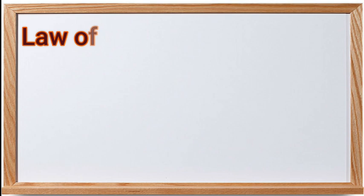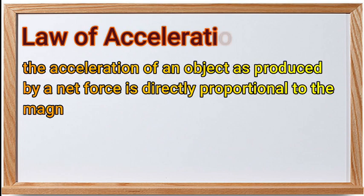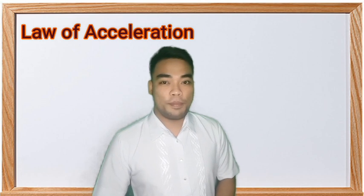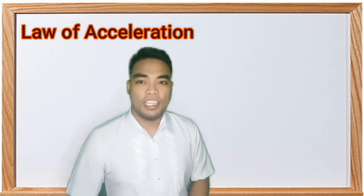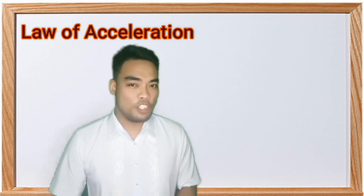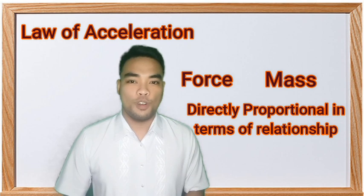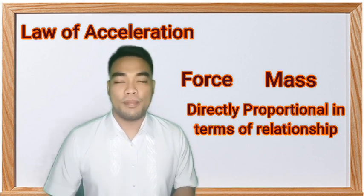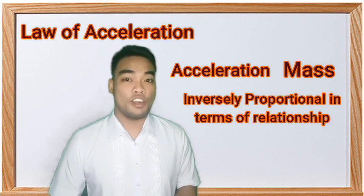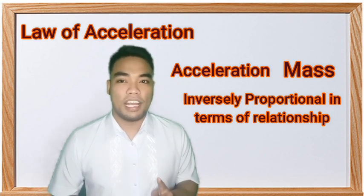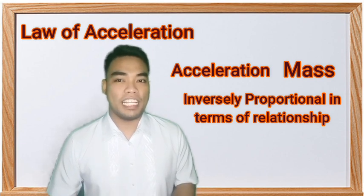Law of Acceleration: The acceleration of an object as produced by a net force is directly proportional to the magnitude of the net force. Further, acceleration is inversely proportional to the mass of the object. The law of acceleration shows the relationship of three quantities: mass, force, and acceleration. It shows that force and mass are directly proportional — the heavier an object, the greater the force needed to move it. Meanwhile, acceleration is inversely proportional to mass — a very heavy object moves slowly, while a lighter object moves faster in a given situation.